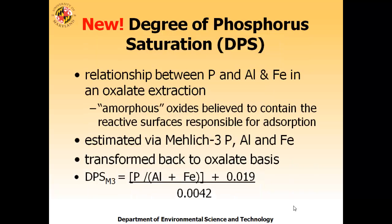One of the new things is the degree of phosphorus saturation. This replaces soil test phosphorus as a much more accurate measurement of whether a soil is saturated with phosphorus. It is essentially the relationship between phosphorus, iron, and aluminum as extracted from the soil in an oxalate extraction. Looking at iron and aluminum in oxalate extraction is an old tool that soil genesis and morphology people have used for decades to characterize what we call amorphous oxides—very fine particles of iron and aluminum, too small to be picked up by X-ray diffraction, with very high surface area and very reactive absorption surfaces for phosphorus.